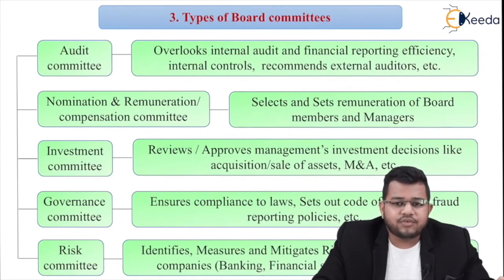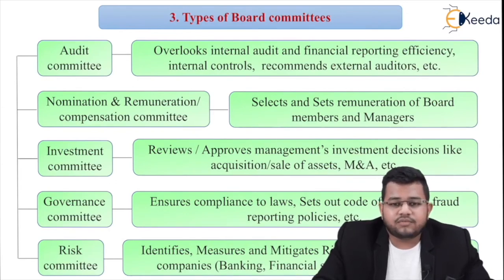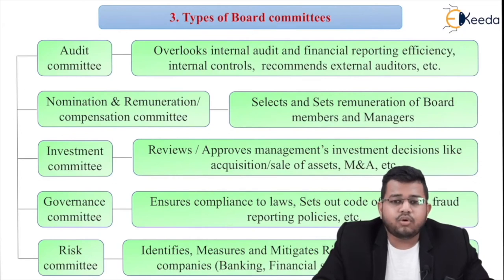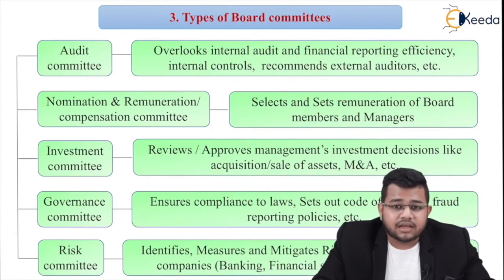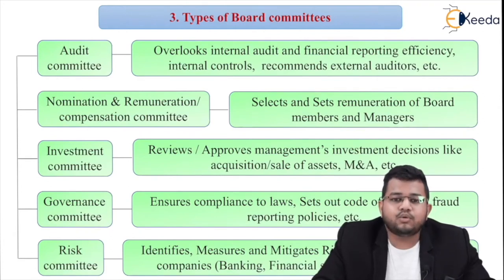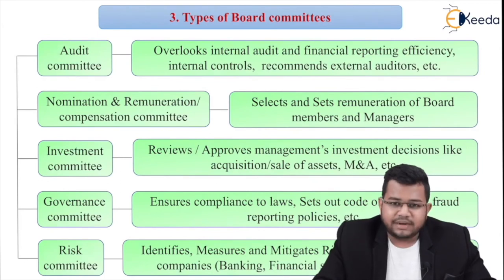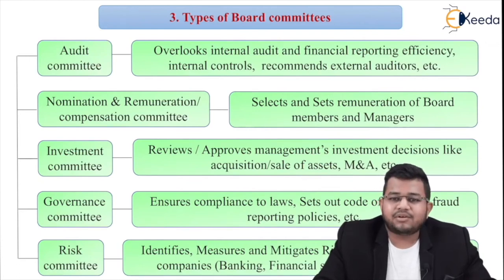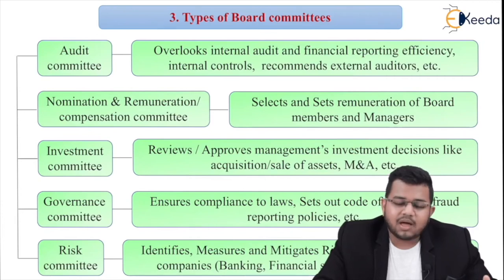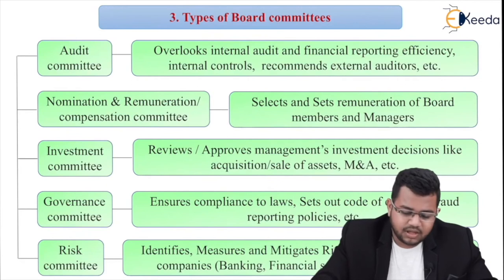The next part covers types of board committees. A board of directors may have, say, 15 directors, but not all of them understand every topic — for instance, finance directors won't add value in marketing meetings and vice versa. That is why the board is divided into committees. There are five types of committees: audit committee, nomination and remuneration (or compensation) committee, investment committee, governance committee, and risk committee.